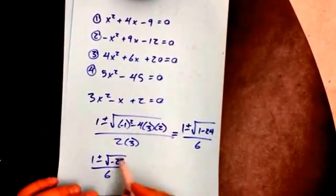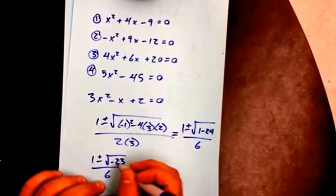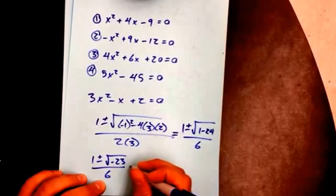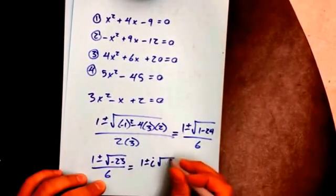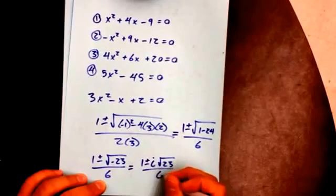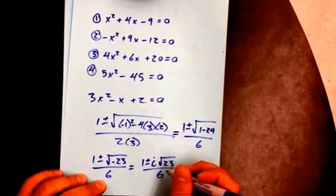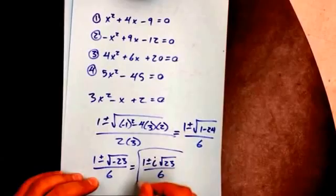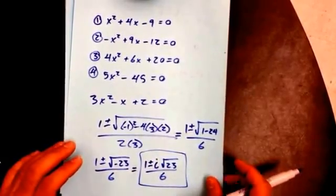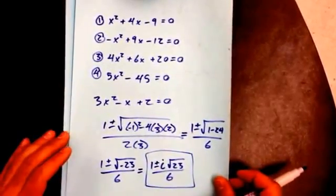1 plus or minus the square root of negative 23 over 6. Now, I can't simplify 23 because that's a prime number, but what I can do is I can get rid of that negative. I can get rid of it by bringing it to the outside as an i. If this was a number that I actually could do the square root of, I would do that, but I can't. So I'm just going to leave it like this. This is my final answer. I can't leave a negative under a square root. Okay, so I'm going to continue on.